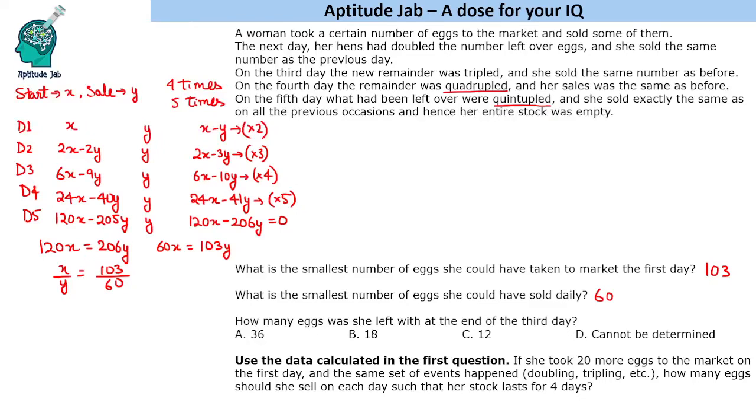Let us verify. Starting with 103, if she sells 60, she will be left with 43. If she doubles it, that becomes 86 on the next day. Selling 60, left with 26. Three times 78 minus 60 is 18. Four times 72 minus 60 is 12. And five times 60 is 60, which equals 0. That is the least she could have taken to the market.